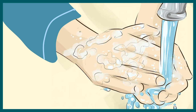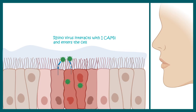Washing hands frequently during this infection would help prevent spreading of the disease through contact. Now let's talk about viral pathology — how the virus can infect our body. The rhinovirus interacts with the ICAM receptor present on the nasal columnar epithelial cells.